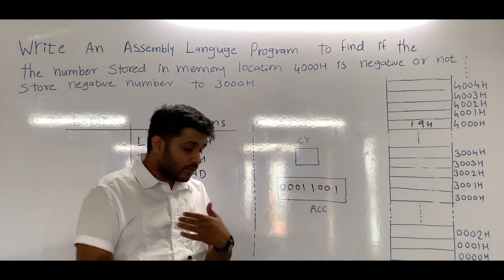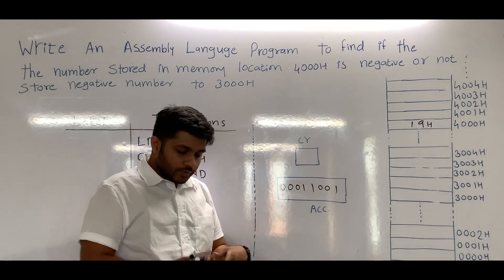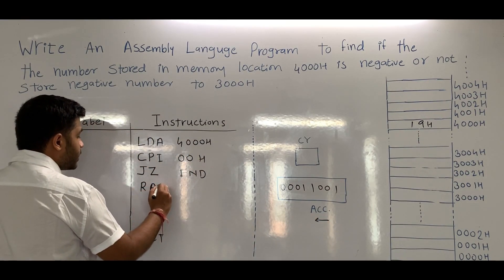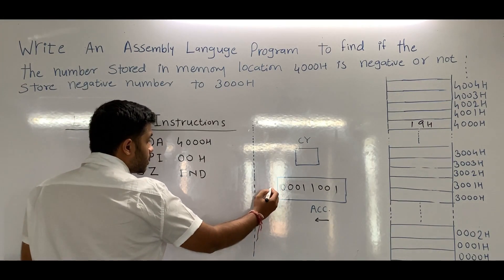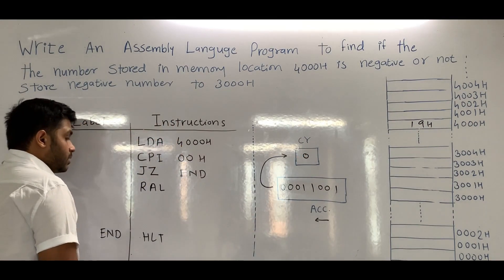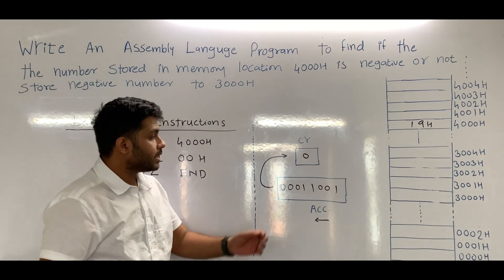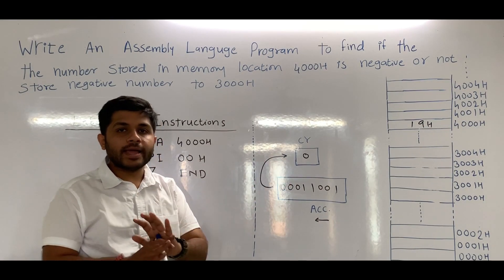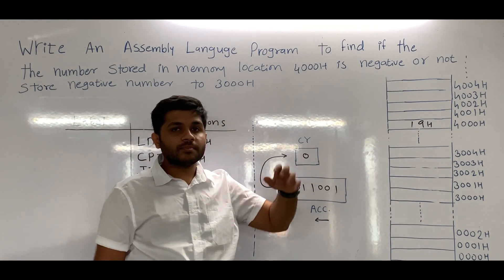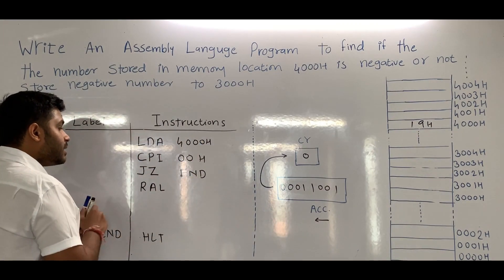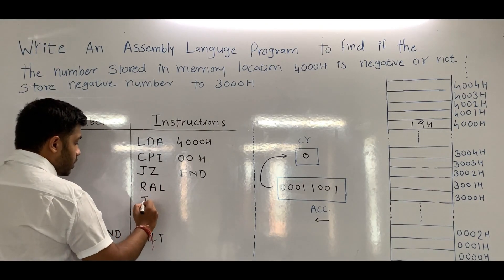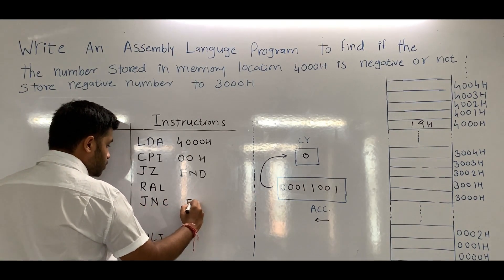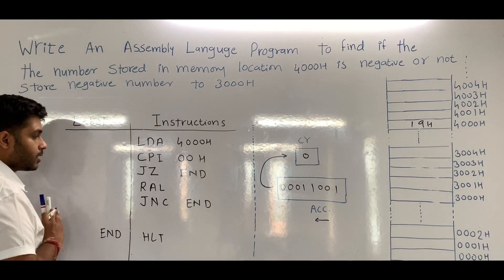So after transferring, we have to process the data. We will rotate the content of the accumulator to the left using the RLC instruction. When we perform this, the MSB is transferred to the carry flag. Since 19H is positive, the carry flag will be 0. When the carry flag is 0, we will end our program because we only need to transfer data to 3000H when the number is negative. So after rotating, if the carry is not set, we use JNC END to jump to the end.